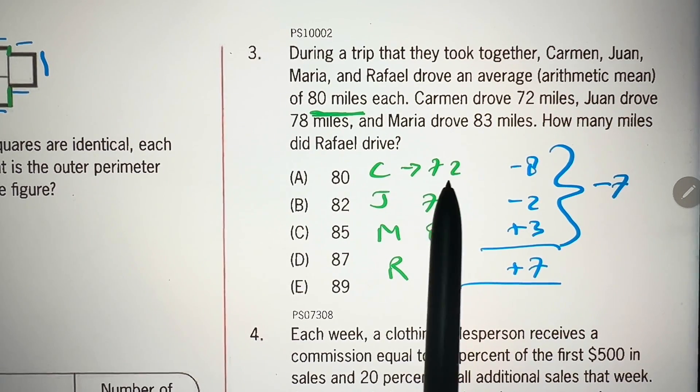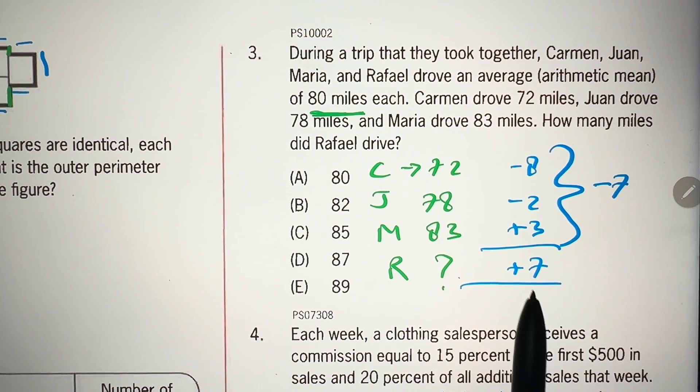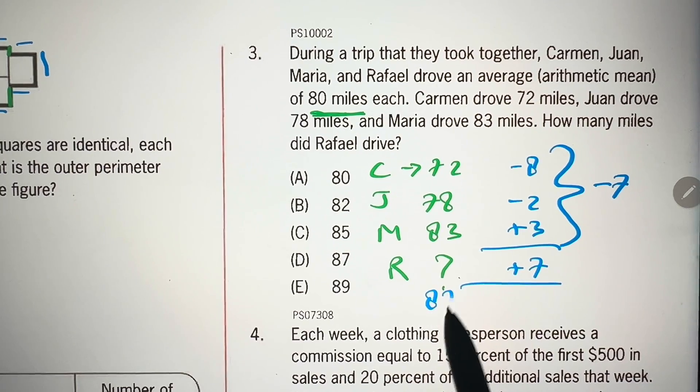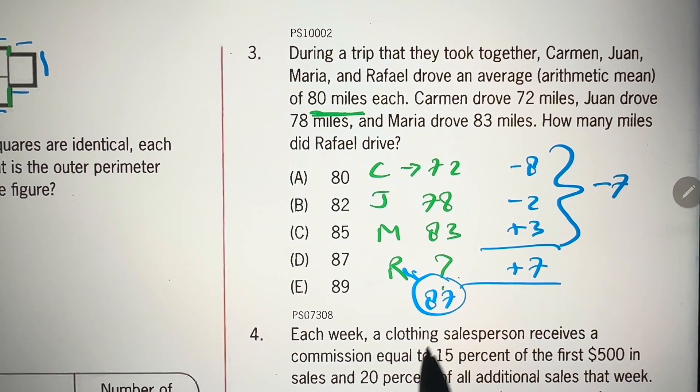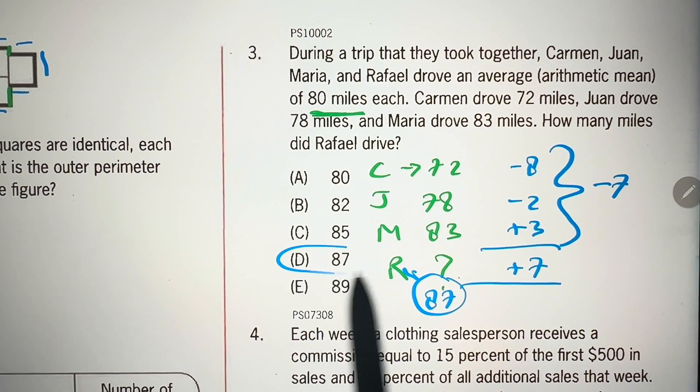Now, we have 80 plus 7 is 87 will come here at Rafael. So, that's our answer, choice D.